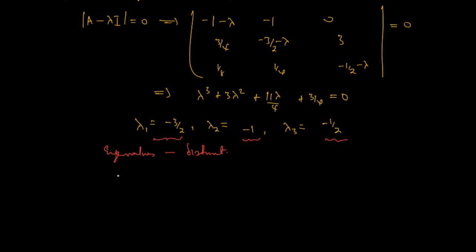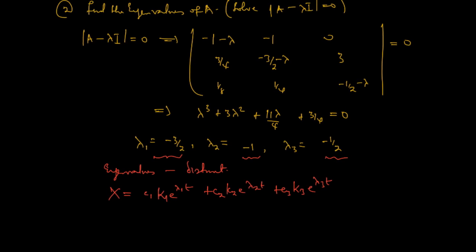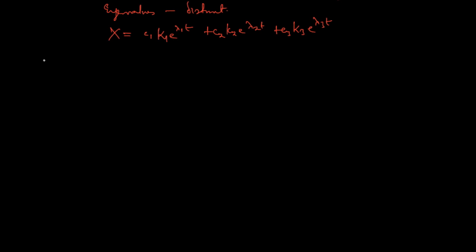Since the eigenvalues are distinct, the general solution of the linear homogeneous system will always take the form: x = c₁k₁e^(λ₁t) + c₂k₂e^(λ₂t) + c₃k₃e^(λ₃t). Here k₁ is the eigenvector of λ₁, k₂ is the eigenvector of λ₂, and k₃ is the eigenvector of λ₃. This brings us to the next step: finding the corresponding eigenvectors.